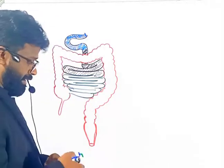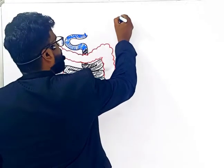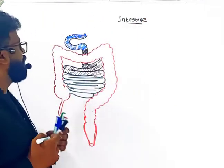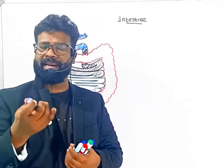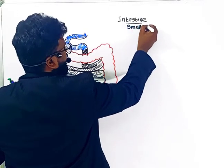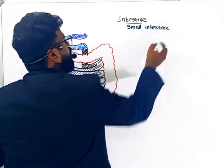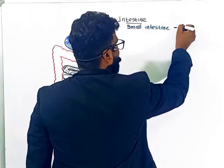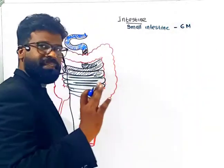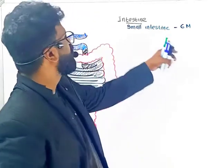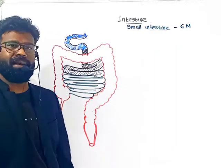Welcome back to our video lecture. The next part is the intestine region. The intestine has two regions: small intestine and large intestine. The small intestine is the longest part of our alimentary canal, about six meters in length.